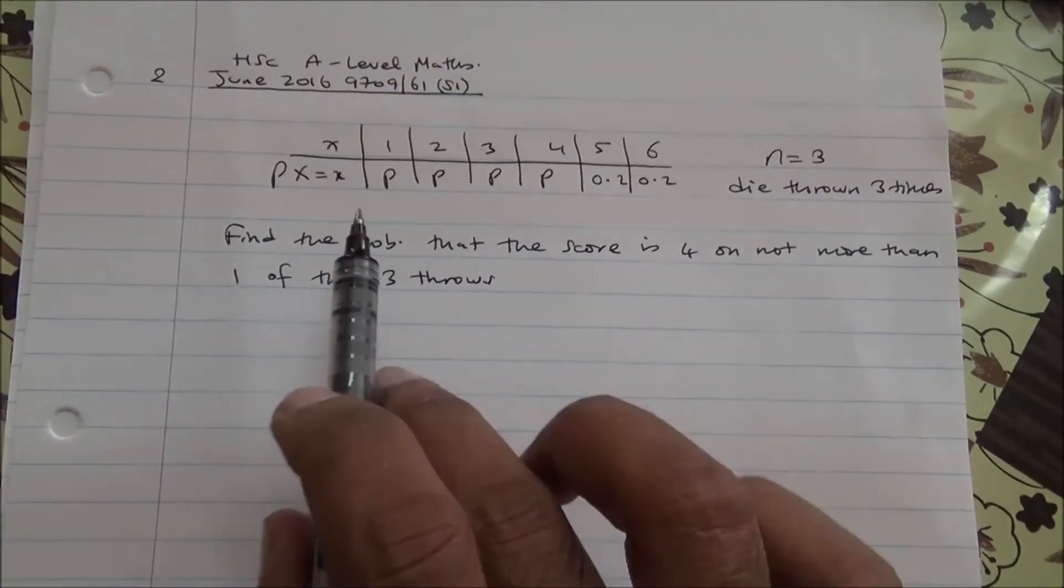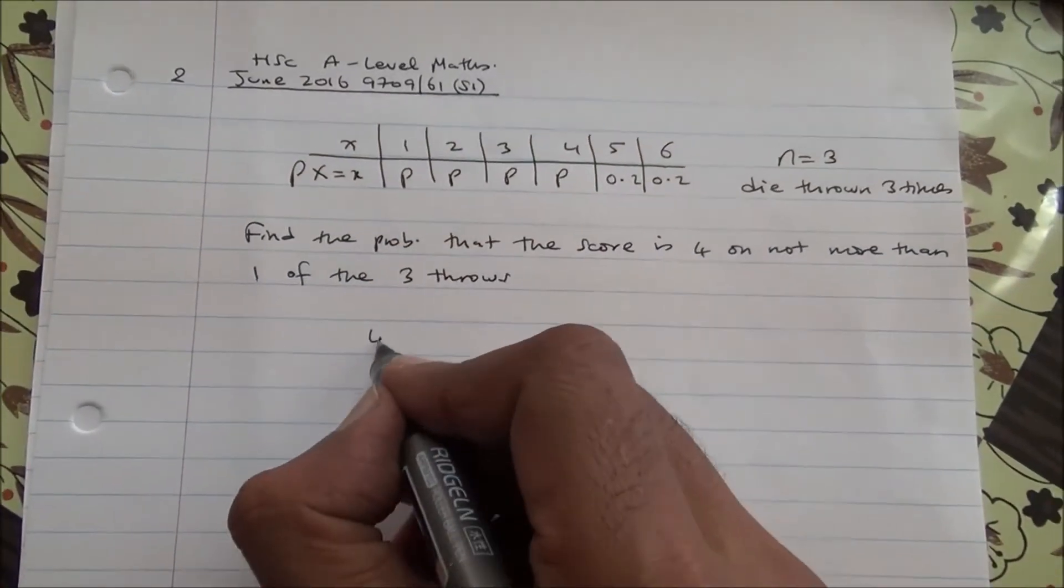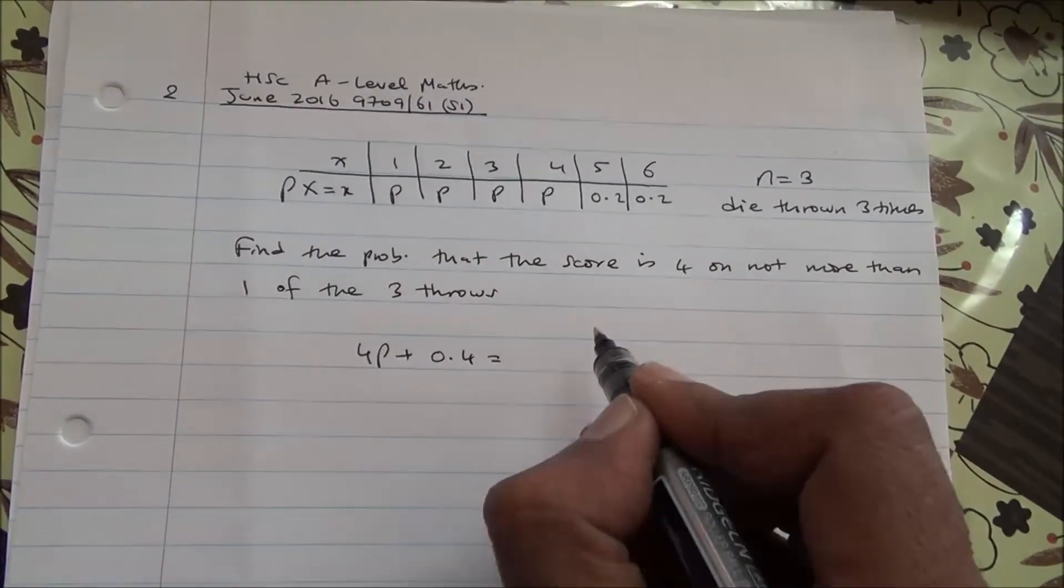Now then, for this question, we're going to find the value of p. So this is 4p plus 0.2, which is 0.4.